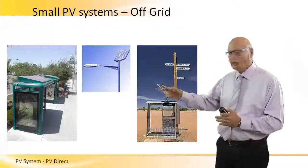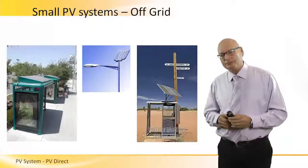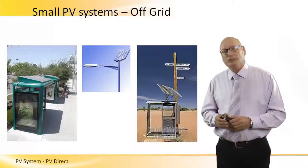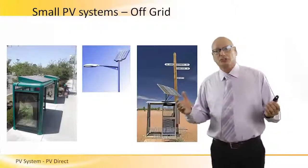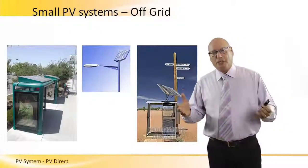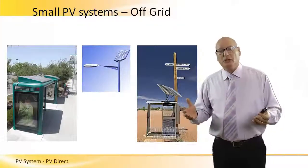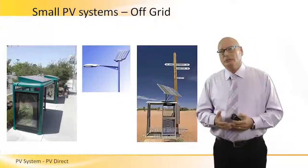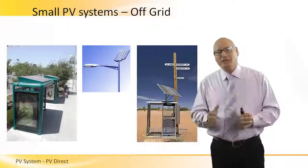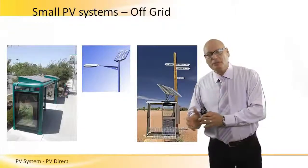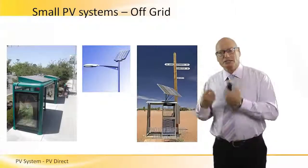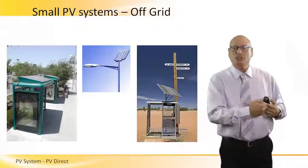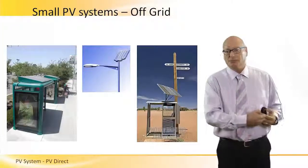We can see this by the length of the shadow. In the middle, we see a street light. The street light gets charged during the day when there is sunlight and operates at night. It's a classical standalone system — during the day it gets energy from the sun, and during the night it discharges that energy to the street light.